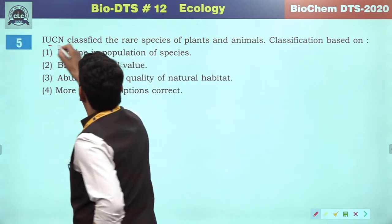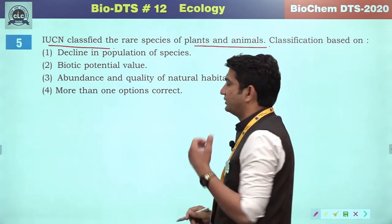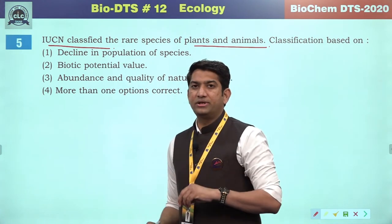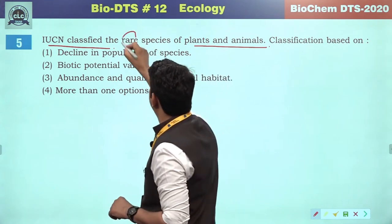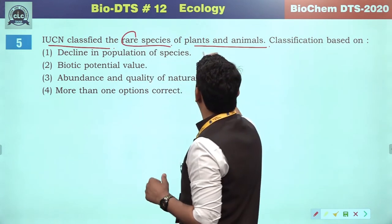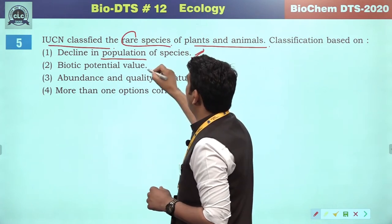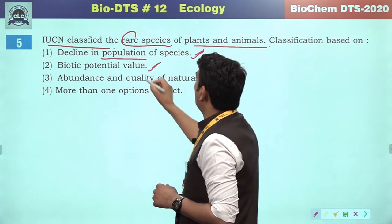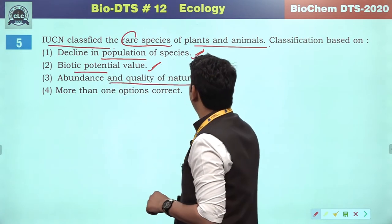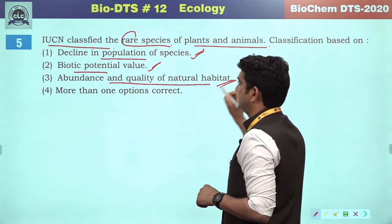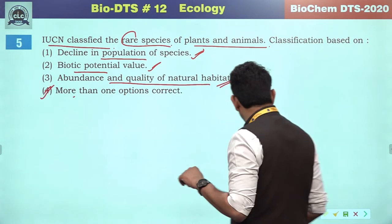IUCN — International Union for the Conservation of Nature and Natural Resources — classified rare species of plants and animals. This classification is based on the decline in population of species. Biotic potential value is the reproductive aspect; abundance and quality of natural habitat may also be concluded. So more than one option will be correct — the correct answer will be option 4.